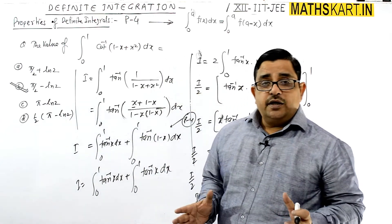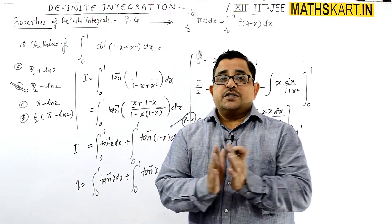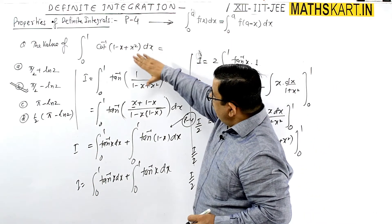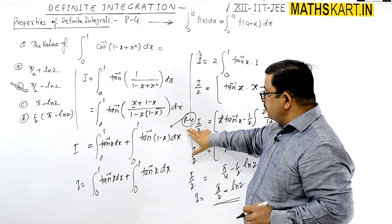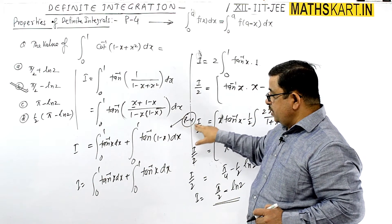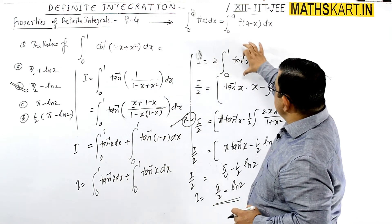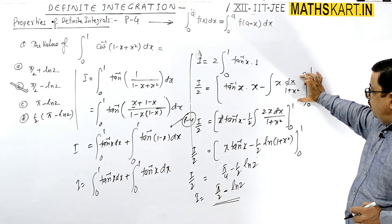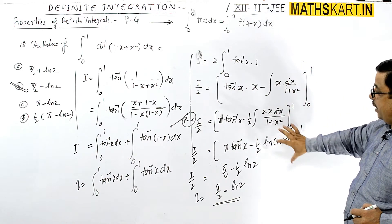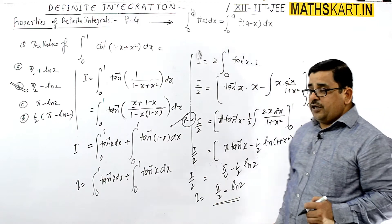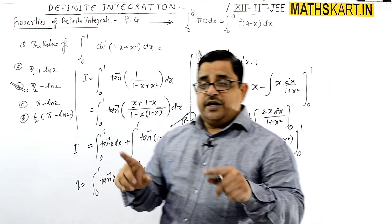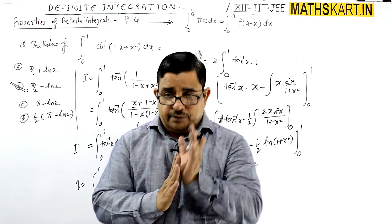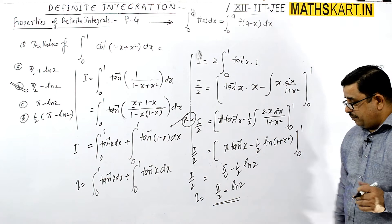The answer is pi by 2 minus ln 2, so option B is correct. In definite integration, whenever such a question appears, Property 4 is used, followed by substitution at the relevant step, and then the particular integration formula for definite integrals is applied — integrating first, then applying limits. This gives us the answer pi by 2 minus ln 2.